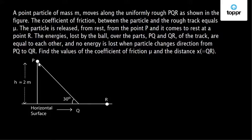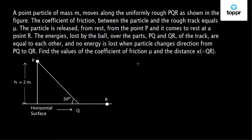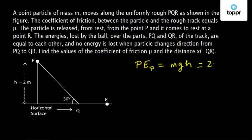From the figure, the particle of mass M is initially at a height h equal to 2 meters from the horizontal surface. It slides down the rough surface with coefficient of friction mu, reaches point Q, then moves along the surface from Q to R, and finally comes to a stop at R. The potential energy of the particle at point P is M times g times h, and since h is 2 meters, it equals 2Mg.